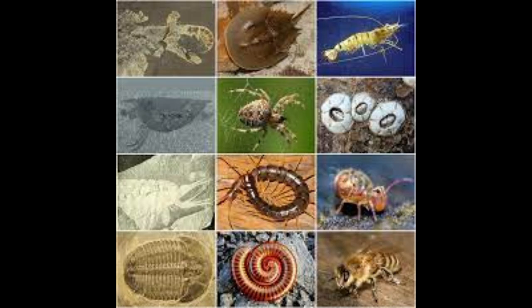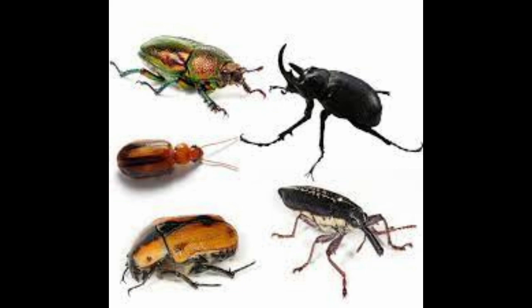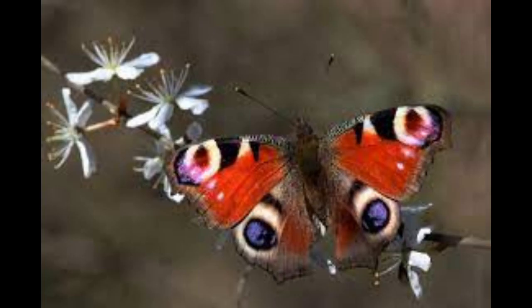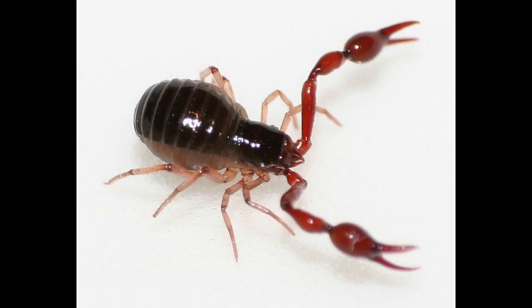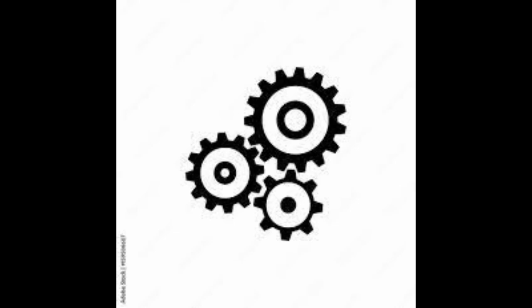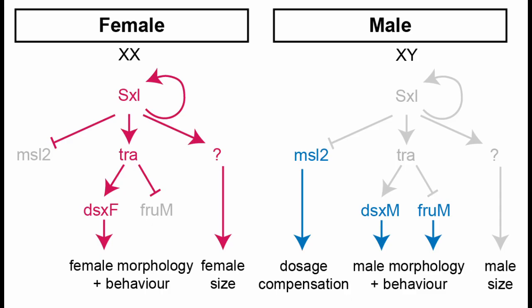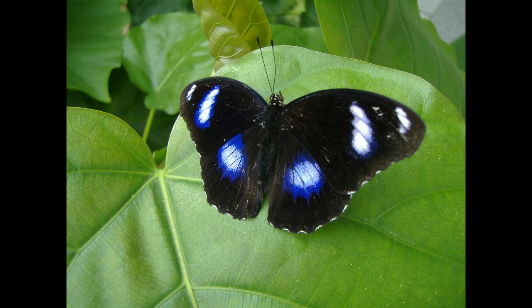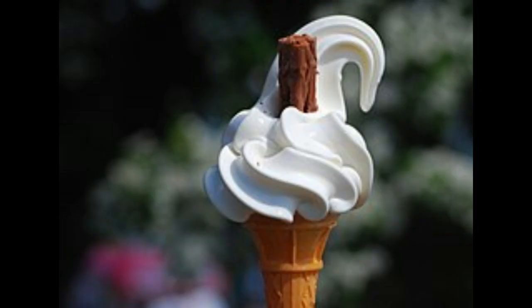Wolbachia that use the mechanism of male killing are found in the arthropod orders Coleoptera, Diptera, Lepidoptera, and Pseudoscorpions. Wolbachia interferes with sex determination, resulting in genetic males becoming feminised and then dying. An extreme example of this is in the blue moon butterfly, Hypolimnas bolina, which had a population containing 99% females.